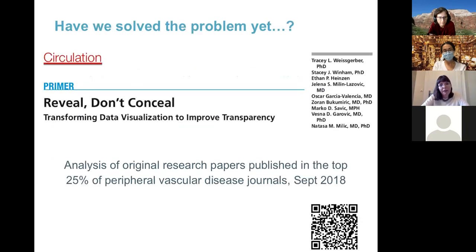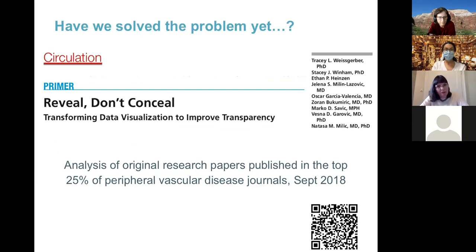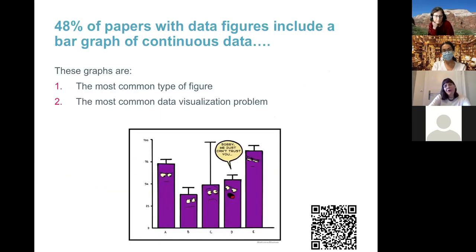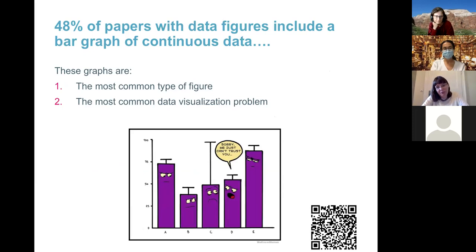A second analysis in 2018 in peripheral vascular disease journals found that among papers with any type of data figure, almost half had bar graphs of continuous data — making it the most common type of data figure and the most common data visualization problem. Second place was not close. So in certain fields, bar graphs remain far more common than anything else, meaning we still have work to do.